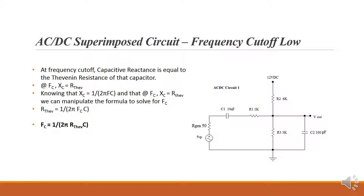Going back to the formula: X sub C equals 1 divided by 2π·FC. If X sub C equals R Thevenin, we substitute R Thevenin for X sub C, giving R Thevenin equals 1 over 2π·FC. Solving for FC: FC equals 1 divided by 2π·R Thevenin·C.